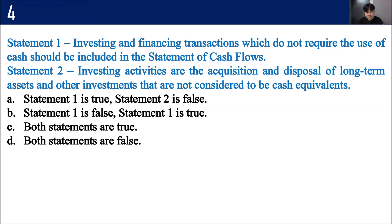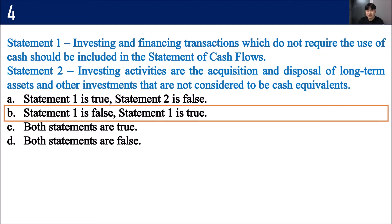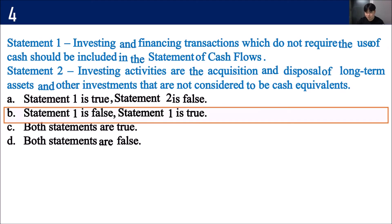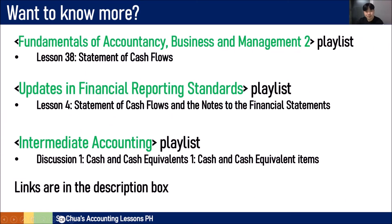Number four: Statement one — investing and financing transactions which do not require the use of cash should be included in the statement of cash flows. Statement two — investing activities are the acquisition and disposal of long-term assets and other investments not considered to be cash equivalents. The correct answer is Letter B. Statement one is false because if investing and financing transactions have no related cash flow, they should not be placed in the statement of cash flows — they should be a separate disclosure. Statement two is true.